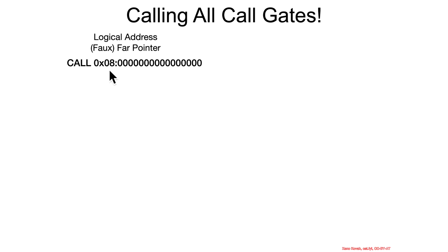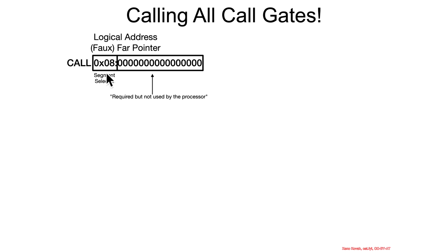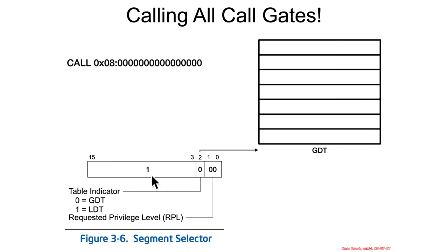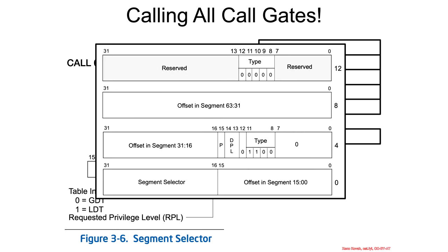Let's look at that again in my customized animated style diagrams. We've got our faux far pointer — a segment selector and an offset that doesn't really matter, so we'll set it to zeros. The segment selector is required but not used. In code, the value 8 is 1000 in binary, meaning it requests privilege level 0, table indicator 0 (selecting from the GDT), and index 1. So index 1 in this call would be expected to point at a call gate segment descriptor — that 16-byte data structure with a far pointer inside it: a segment selector and a 64-bit offset.